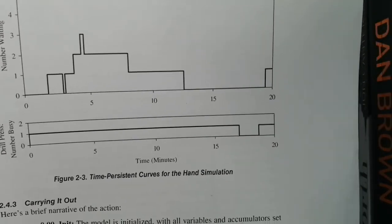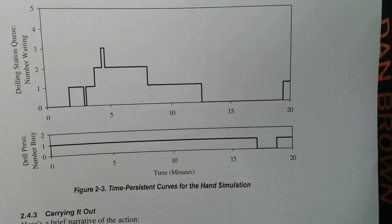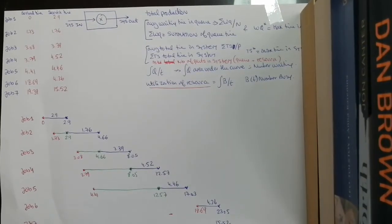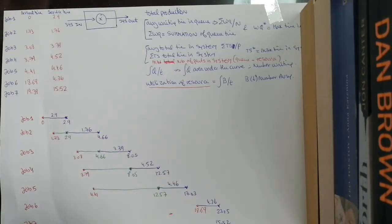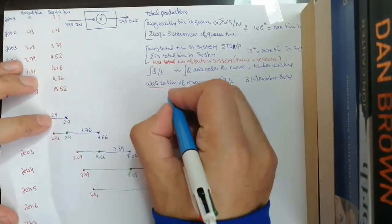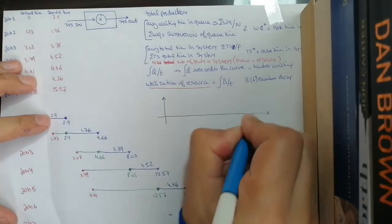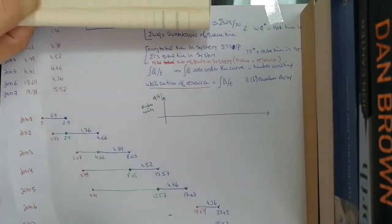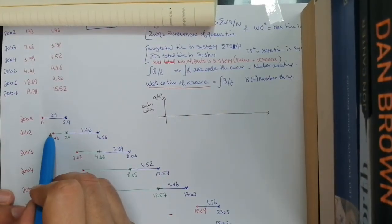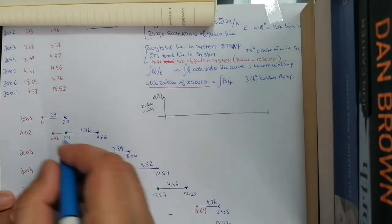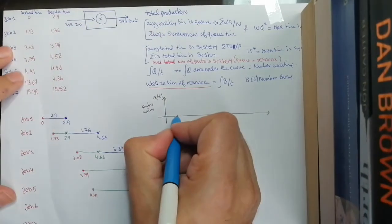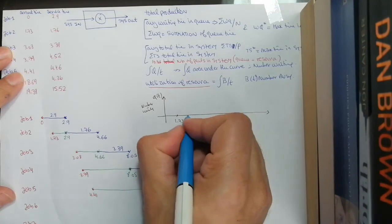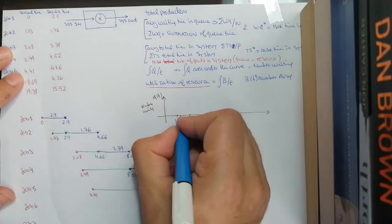Now I'll show you how to draw the queue length diagram by hand. We need the number waiting in queue, Qt, and the number busy in the server, Bt. From 0 to 1.73, no one is waiting — only one job is being served. At 1.73, job 2 arrives; once job 1 finishes at 2.9, job 2 is waiting — so we have 1 job in queue.